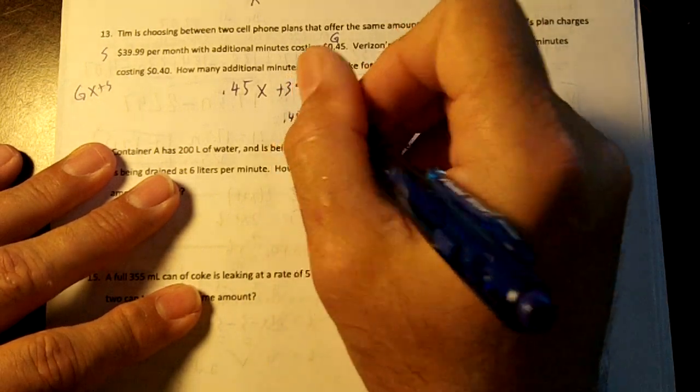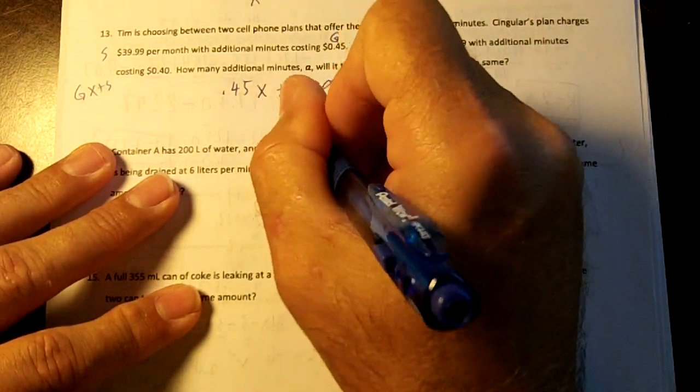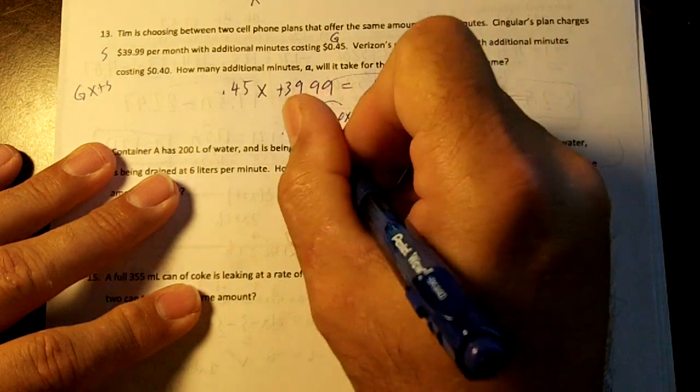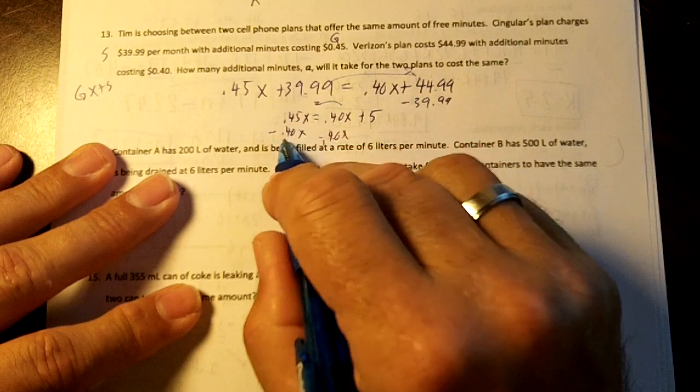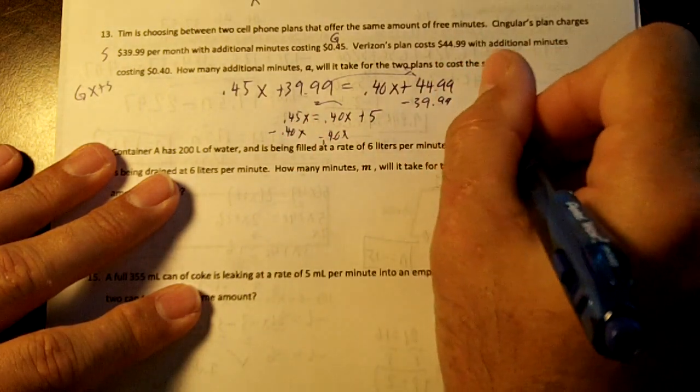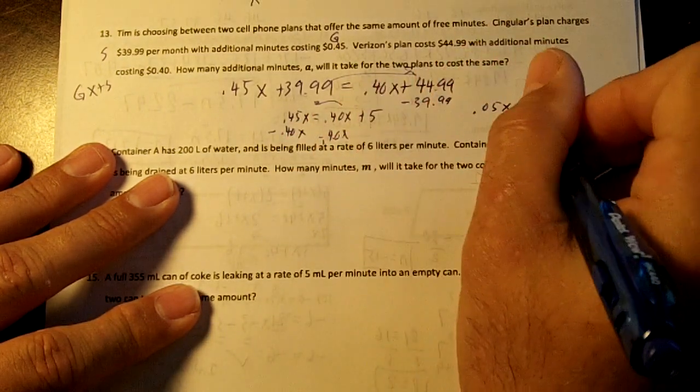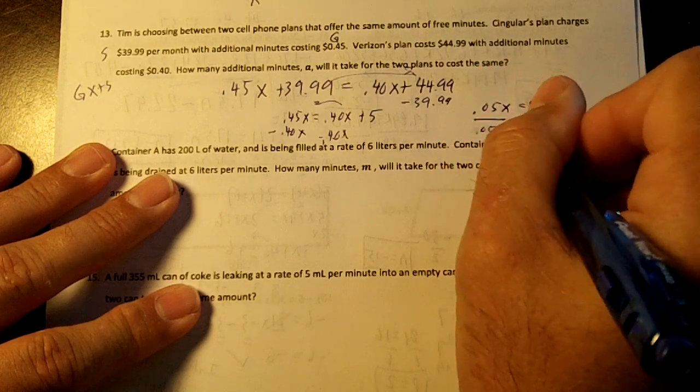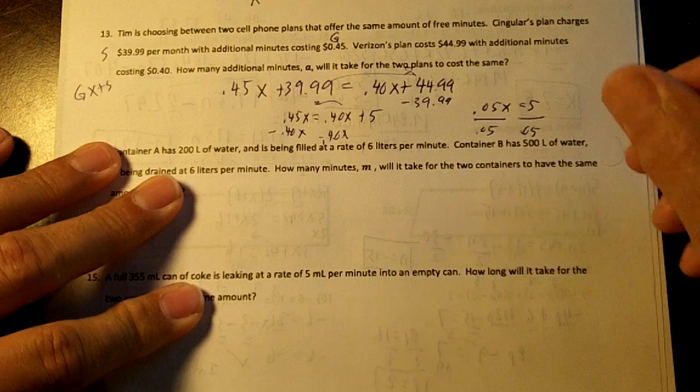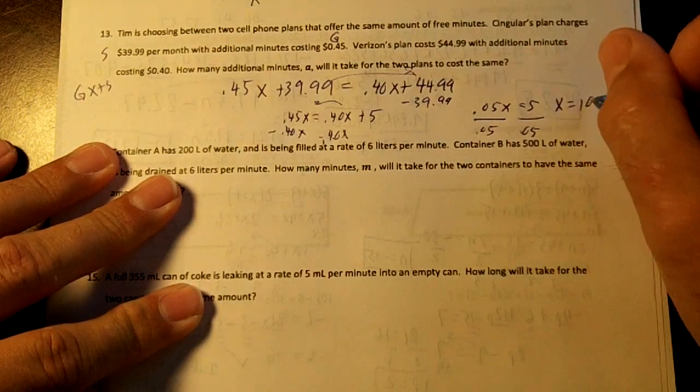Now I'm going to move over my $0.40X. Now $0.45 minus $0.40 is $0.05, equals $5. Divide by .05, and you're going to end up with 100. So X equals 100 minutes.